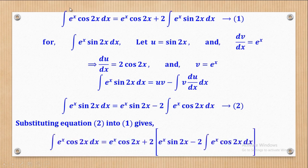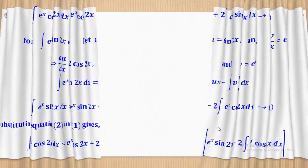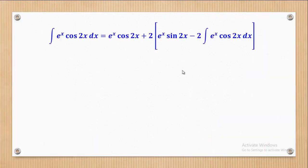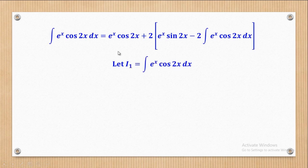So equation 1 is: the integral of e^x cos(2x) dx equals e^x cos(2x) plus 2 times the integral of e^x sin(2x) dx. Where there is this second integral, I'll put the expression from equation 2, which is in the box bracket. To simplify easily, we shall let i1 be equal to the given integral, which is the integral of e^x cos(2x) dx. That means wherever there is the integral of e^x cos(2x), I will put i1 — so both occurrences are replaced by i1.